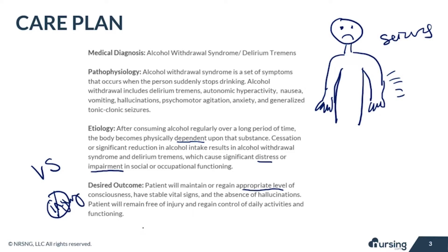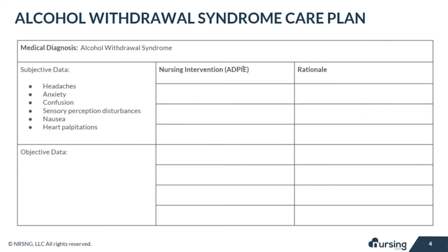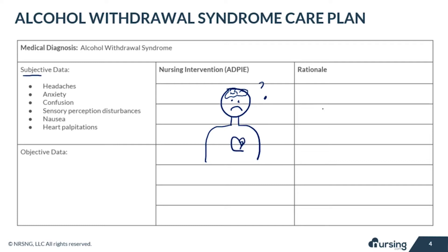The patient will remain free of injury and regain control of daily activities and functioning — this is all what we want when they leave the hospital. Now let's look at the subjective data. Your patient is not going to be feeling very well at all. They're going to have headaches, feel anxious, might feel really confused, have some nausea and heart palpitations.